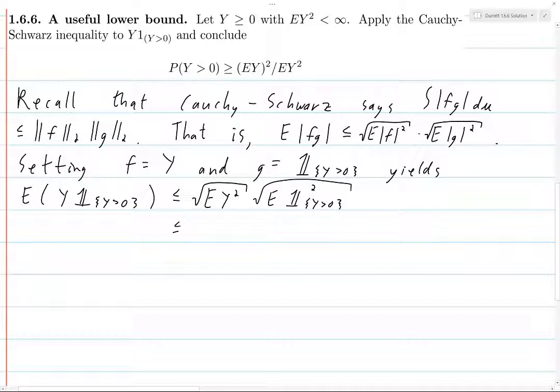If we look at the left-hand side, the expected value of Y times the indicator where Y is greater than 0, this is just the integral of Y over the set where Y is strictly greater than 0. But we know that Y is either going to be equal to 0 or strictly greater than 0 at any point, because Y is greater than or equal to 0.